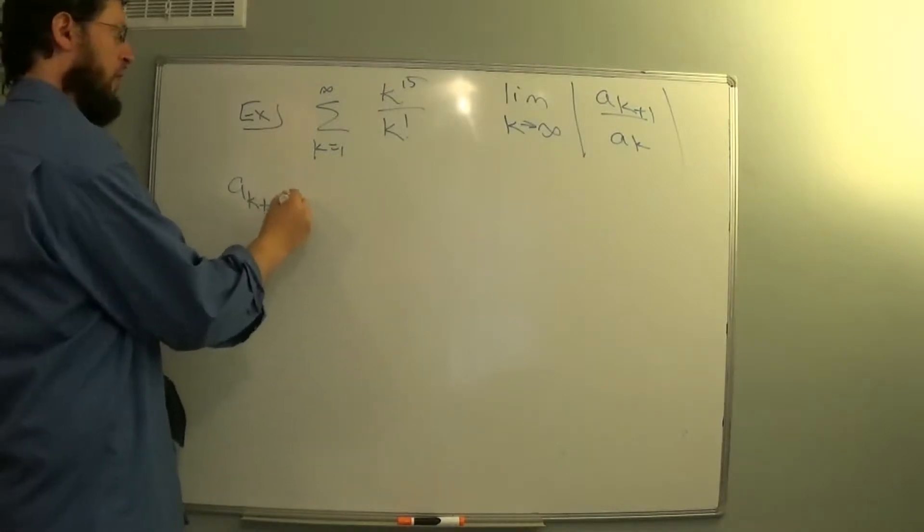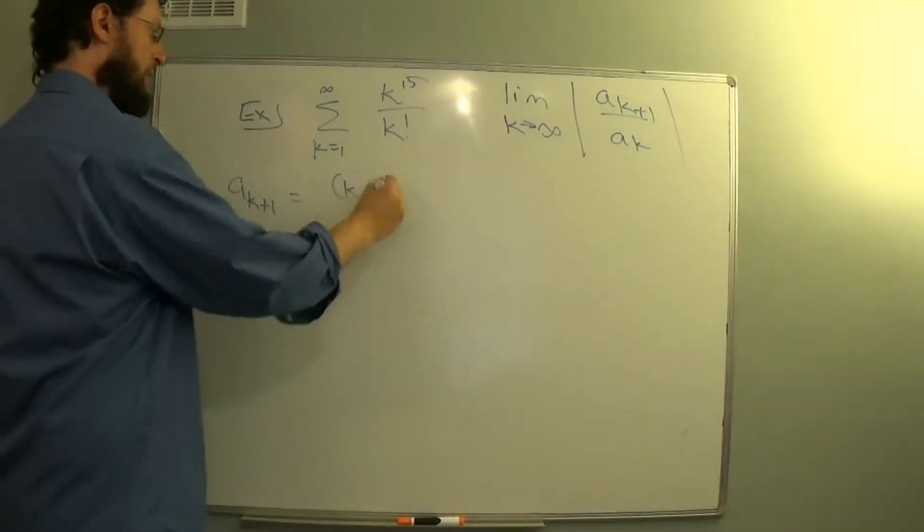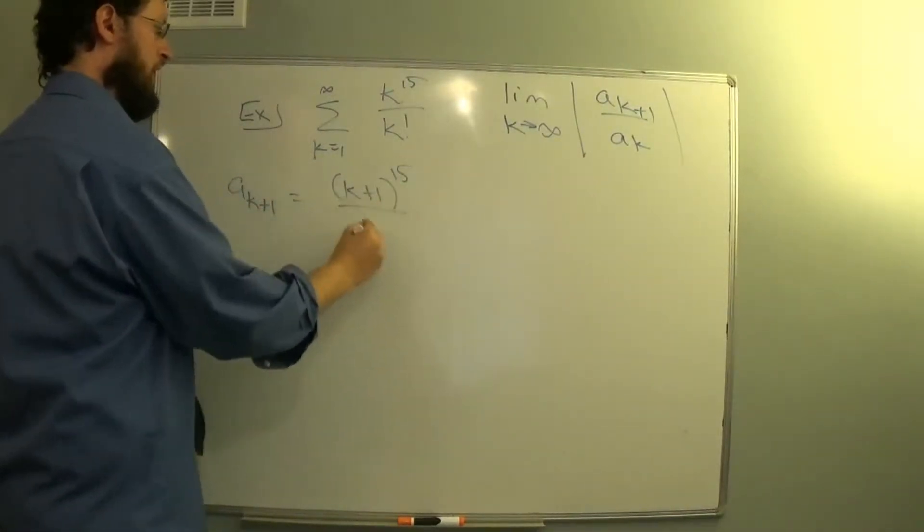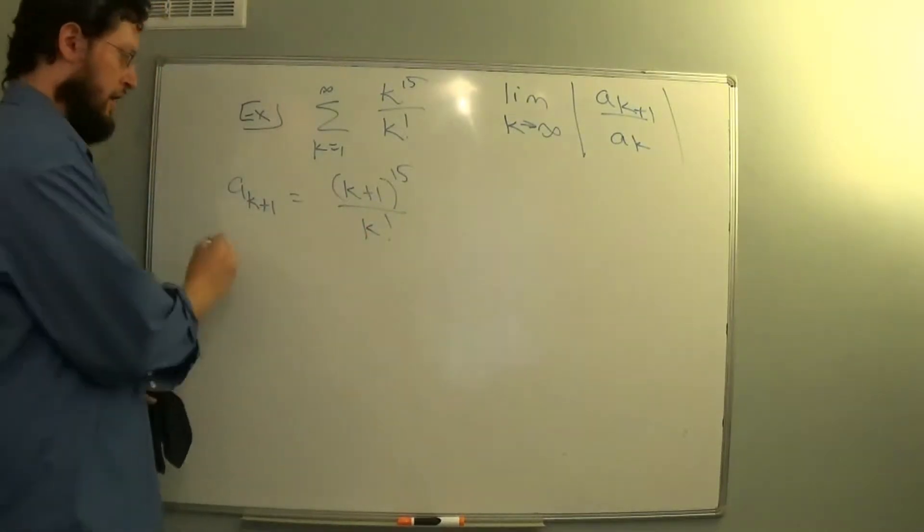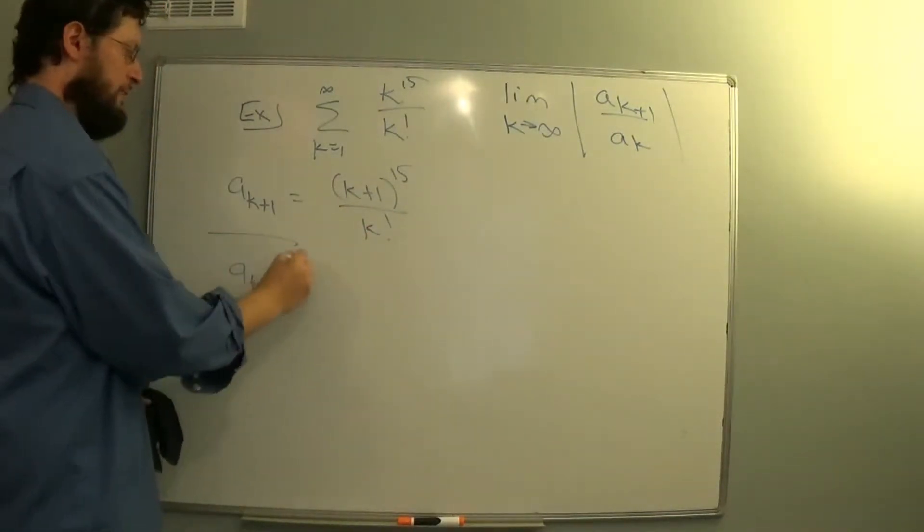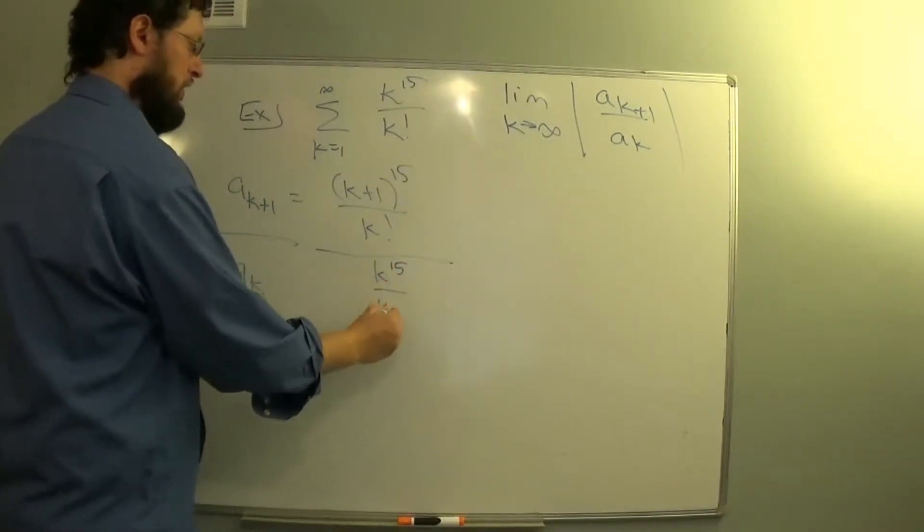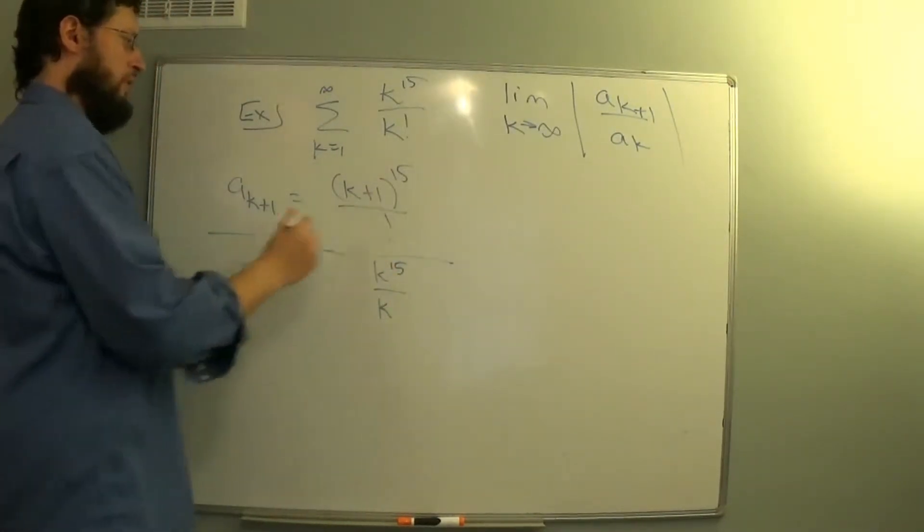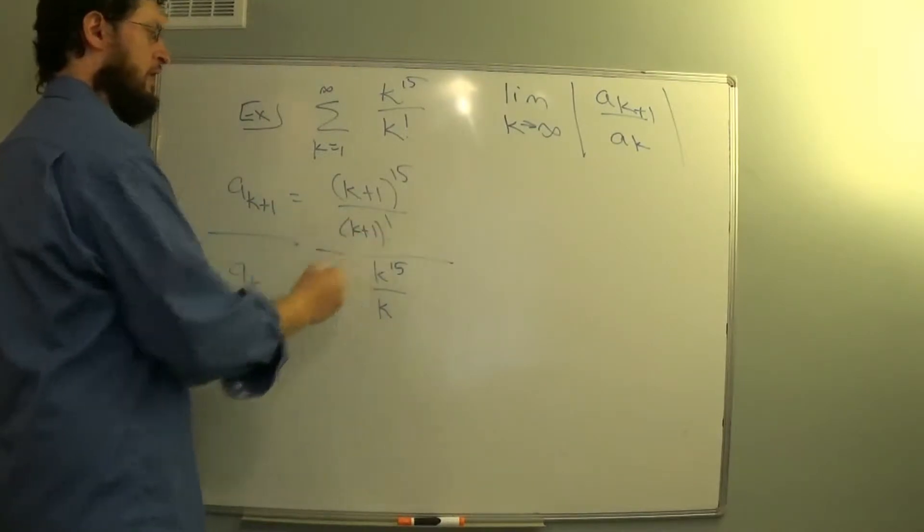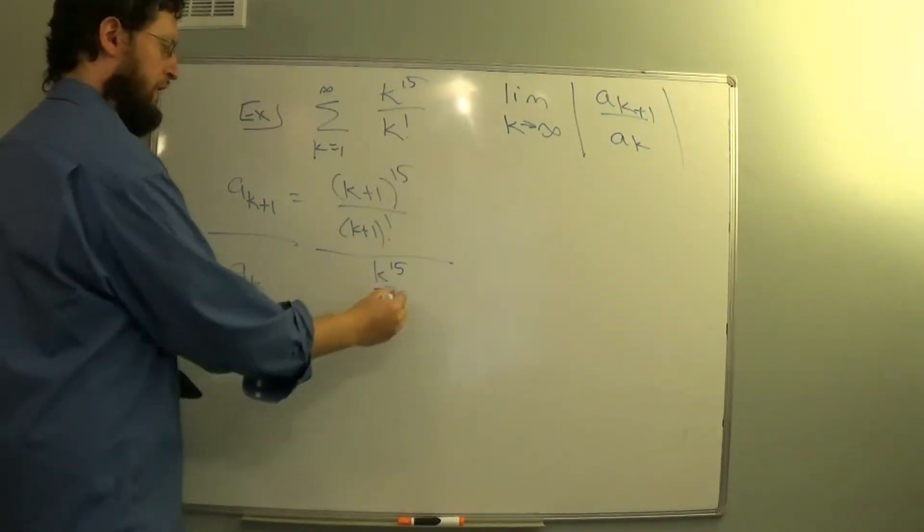a_{k+1} is k plus 1 to the 15 over k factorial. a_k is k to the 15, sorry this should be a_{k+1} factorial. k to the 15 over k factorial.